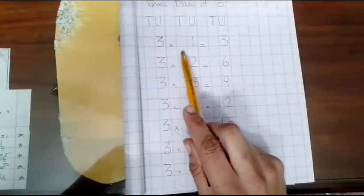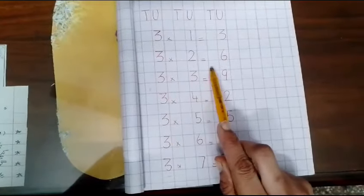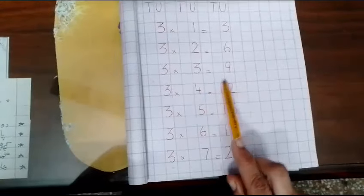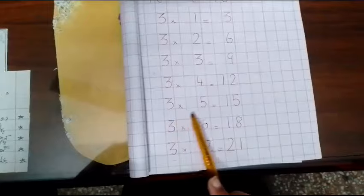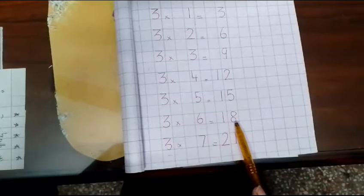I will start: 3 times 1 is 3, 3 times 2 is 6, 3 times 3 is 9, 3 times 4 is 12, 3 times 5 is 15, 3 times 6 is 18.